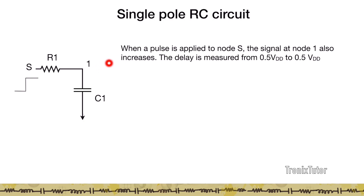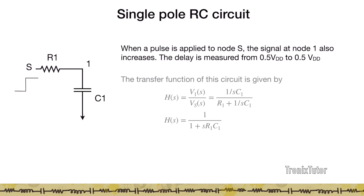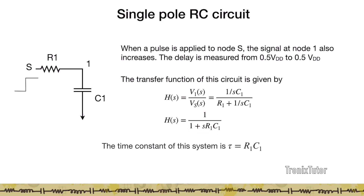We measure the delay from when S crosses 50% of VDD to when the voltage at node 1 crosses 50% of VDD. A quick way to find the time constant is using S-domain analysis, finding the transfer function V1(S)/Vs(S), which works out to 1/(1 + S·R1·C1). This is the single pole circuit with a pole at frequency 1/(R1·C1), and the time constant is the coefficient of the first-order S term in the denominator, given by R1·C1.